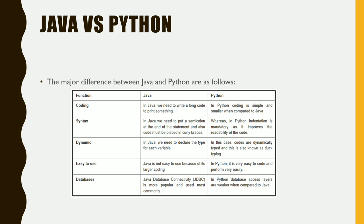Continuing the Java vs Python comparison: ease of use — Java is not easy to use because of its larger coding requirements, whereas in Python it is very easy to code and perform tasks. For database connectivity, Java database connectivity is more popular and commonly used, while in Python database access layers are weaker compared to Java. These are a few of the differences; there are many more.